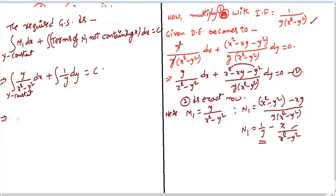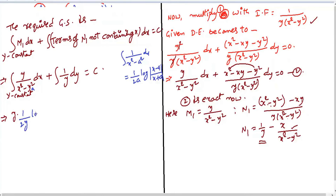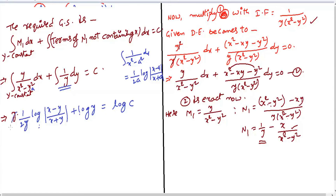For the first integral, y is constant and we integrate 1/(x² - y²) dx using the formula ∫1/(x² - a²) dx = 1/(2a) · log|( x - a)/(x + a)|. With a = y, this gives y · [1/(2y)] · log|(x - y)/(x + y)| = (1/2) log|(x - y)/(x + y)|. The second integral gives log y. Taking log C on the right side, the y in the first term cancels.